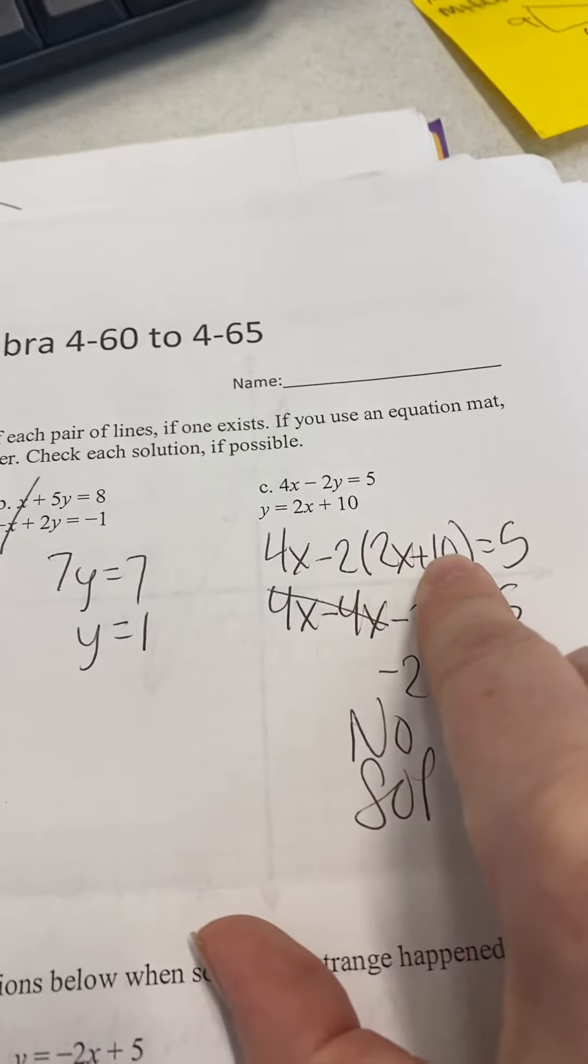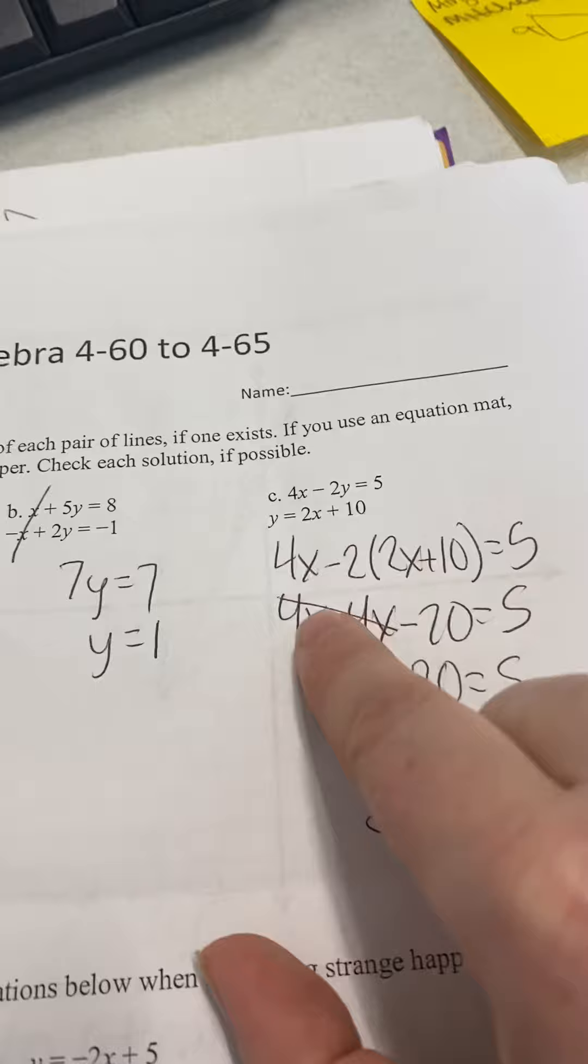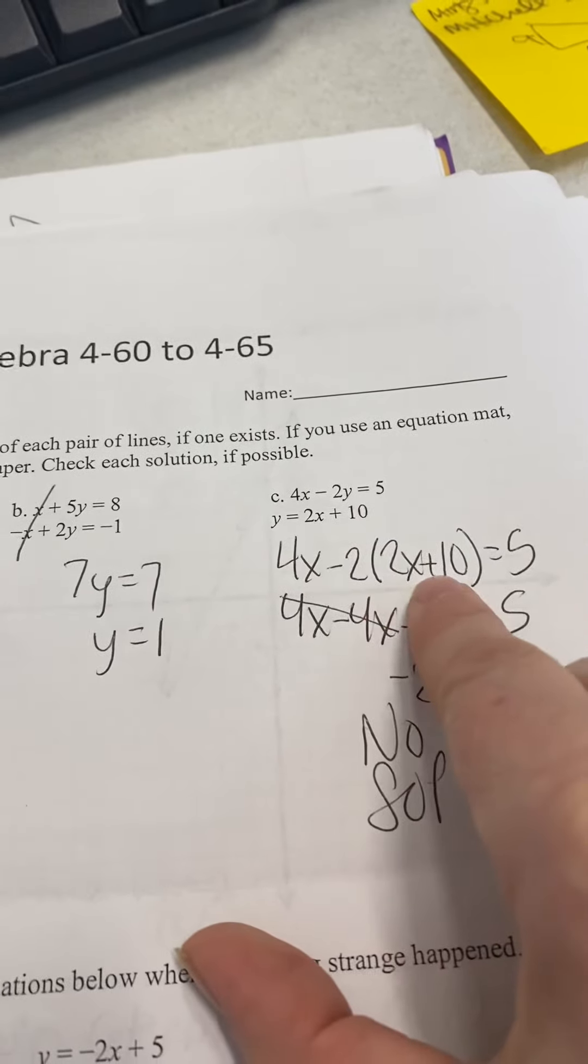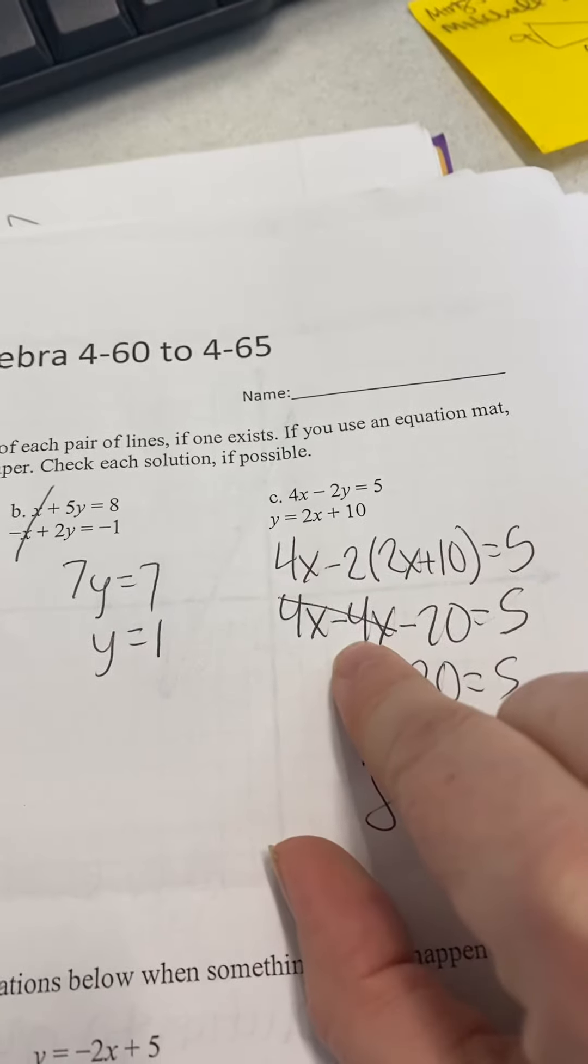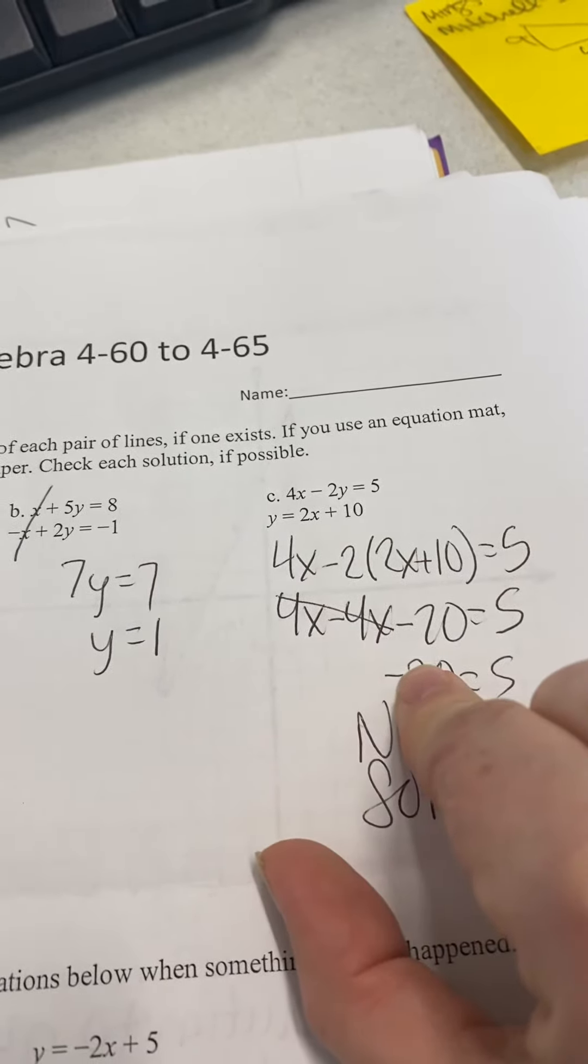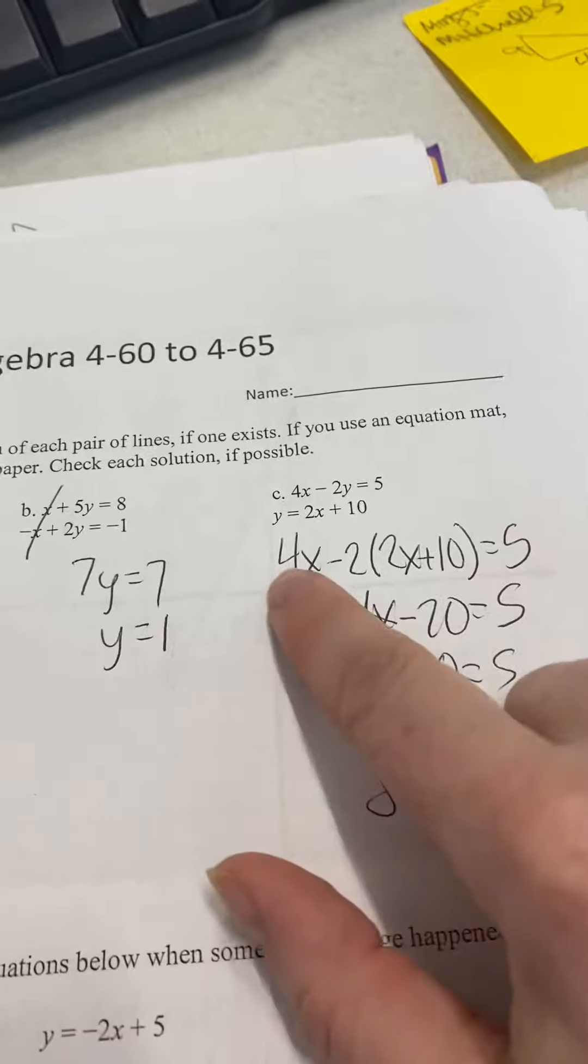You would have 4x minus 2 times the quantity 2x plus 10 equals 5. Then you do the distributive property: negative 4x, negative 20. The 4x minus 4x cancels, so you have negative 20 equals 5.